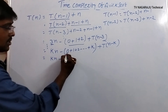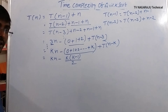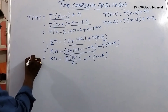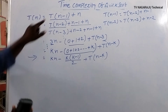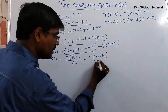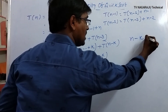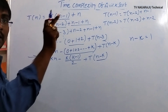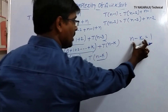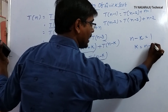Applying the base condition: T(1) = 1, so n − k = 1, meaning k = n − 1. Everything must be expressed in terms of n. Substituting k = n−1: T(n) = (n−1)·n − (n−1)(n−2)/2 + T(1).